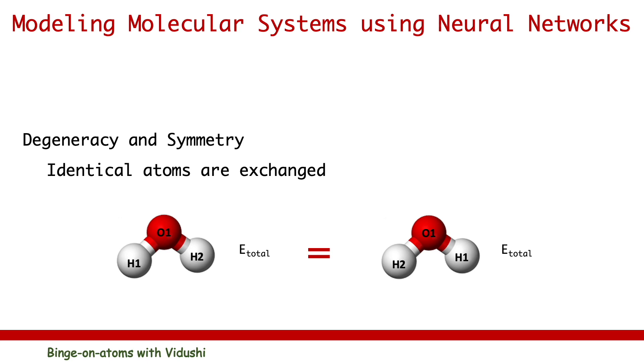Second, degeneracy and symmetry. This means predicted properties should not change if the identical atoms are interchanged. As you see here, the energy predicted by neural network for this water molecule should not change if H1 and H2 hydrogen atoms are interchanged in their positions.